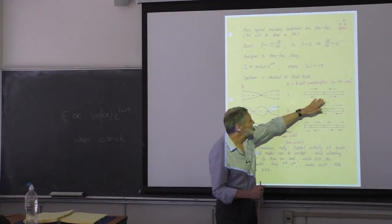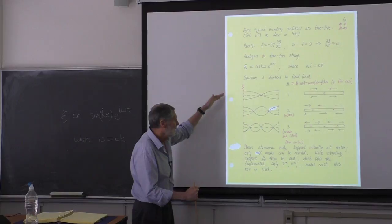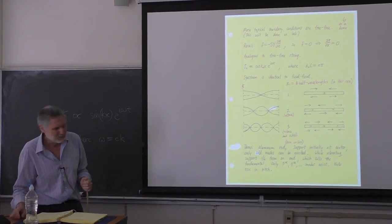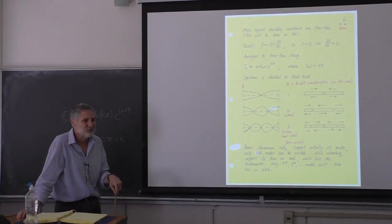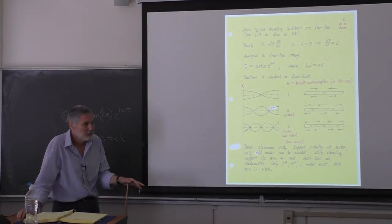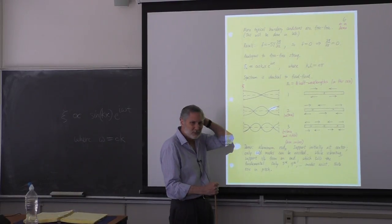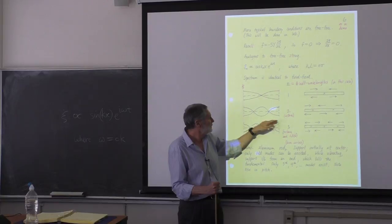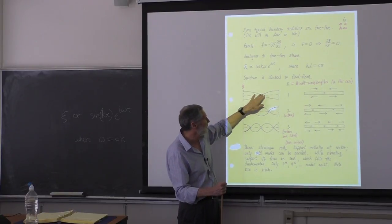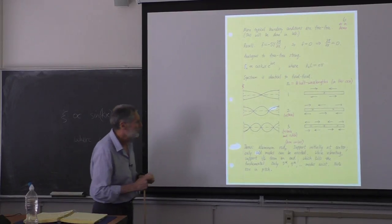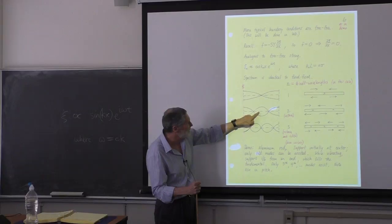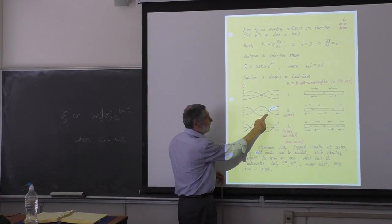So here we have something similar to before, and now the motion would look like this with a node in the center. By the way, acoustics and music are inextricably entwined — it goes way back. This twice the frequency — that's an octave up. Whenever the frequency is doubled, the musical interval is an octave. The fourth mode is an octave up from the second mode. And the ratio of three-to-two — what they call a perfect fifth.